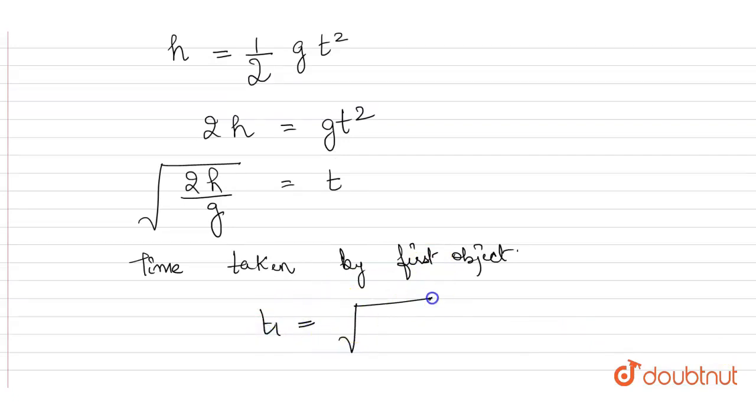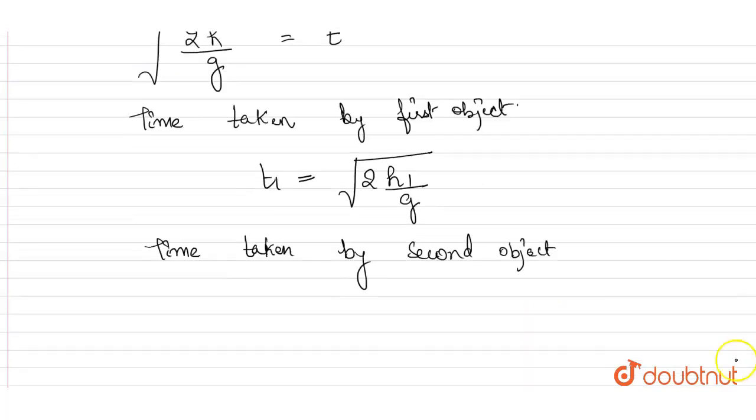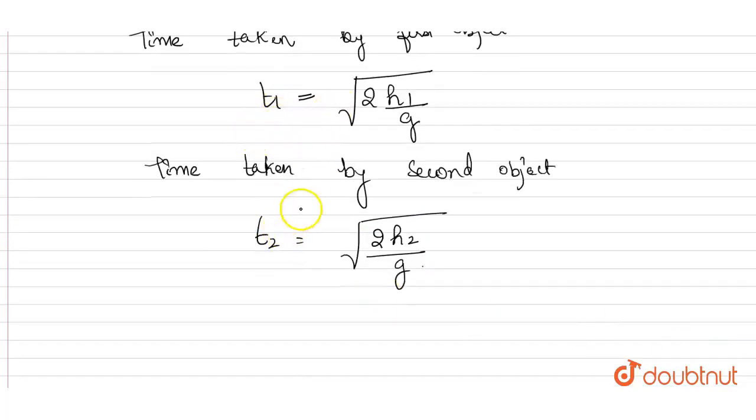g is same, right? Now for the second one it will be: time taken by second object will be t2 = √(2h2/g). Now we have t1 and t2.